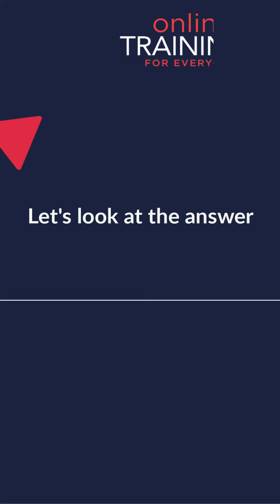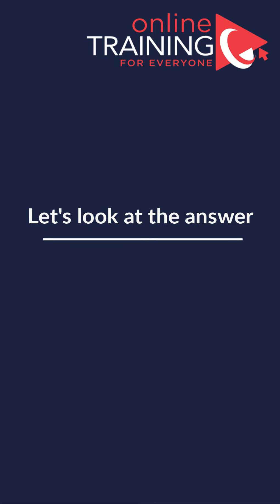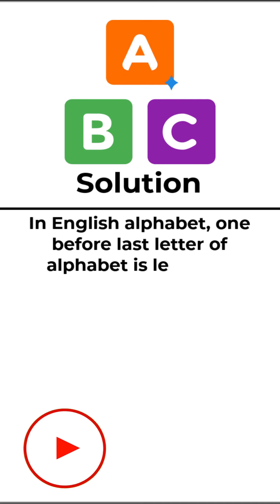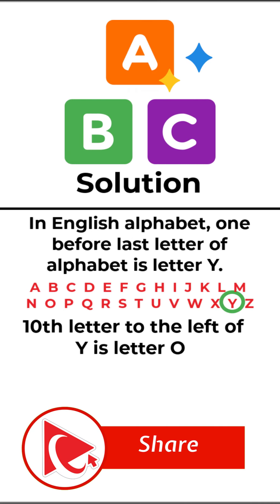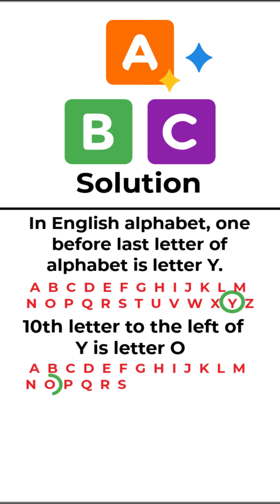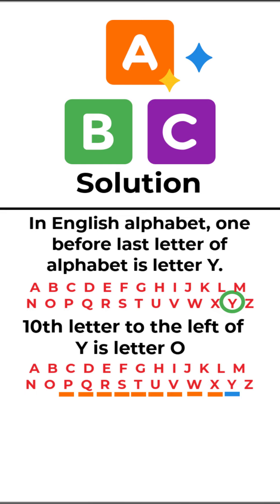As you might be well aware, in the English alphabet there are 26 letters, and the letter one before last is letter Y. The 10th letter to the left of the letter Y would be letter O. Let me demonstrate it to you. If I am currently at the letter Y, let's count 10 letters to the left: 1, 2, 3, 4, 5, 6, 7, 8, 9, and 10. I ended up on the letter O.